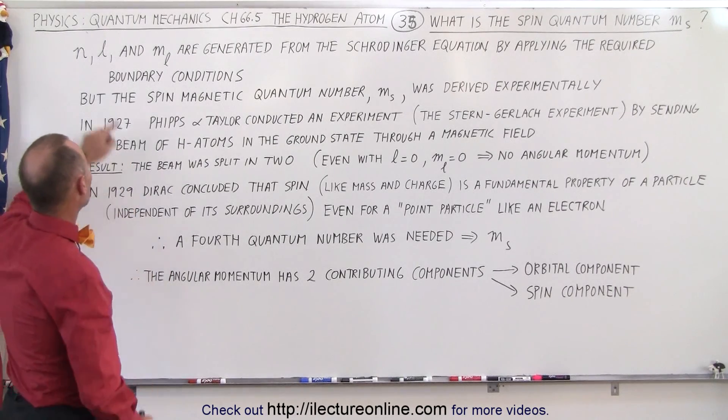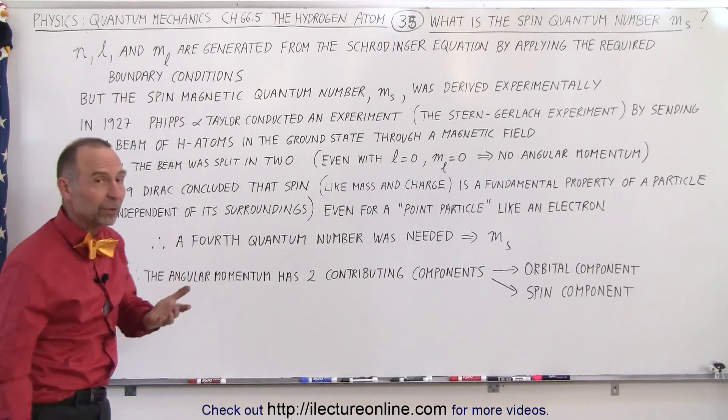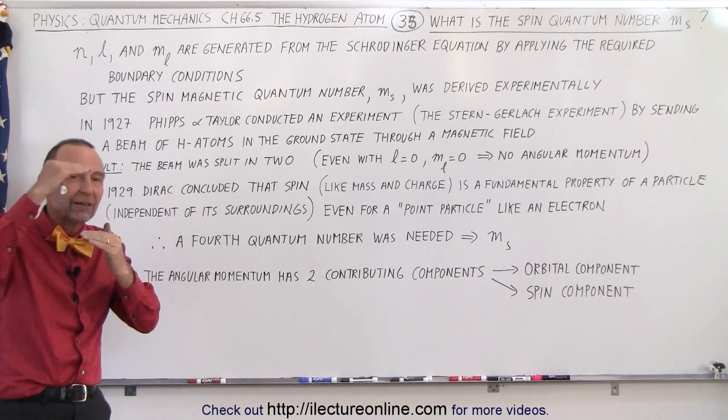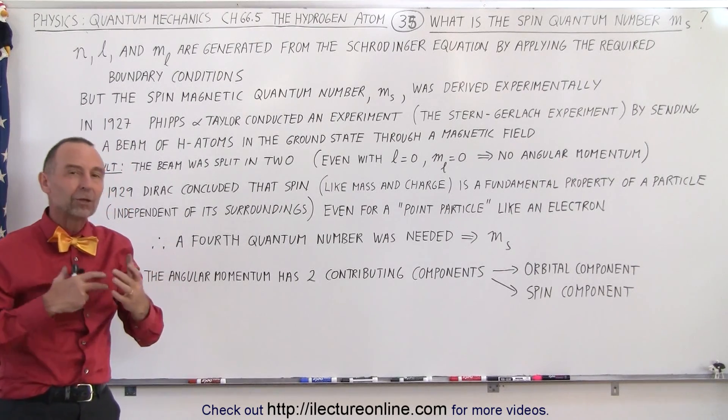As a matter of fact, the three quantum numbers are N, L, and M sub L. N, the principal quantum number, is associated with the energy level of the electron in the hydrogen atom. L is associated with the angular momentum